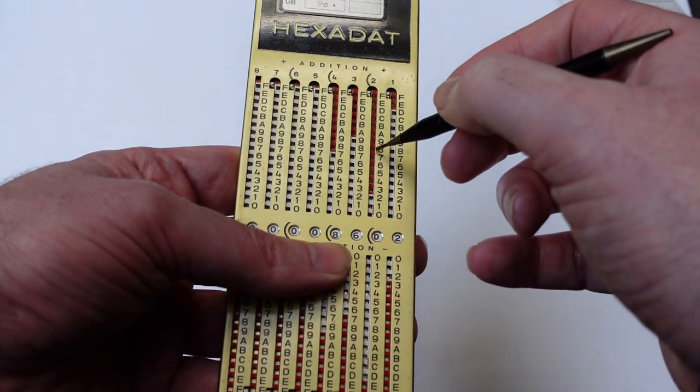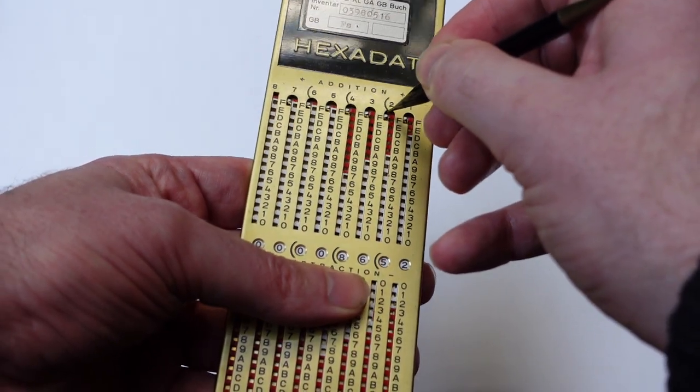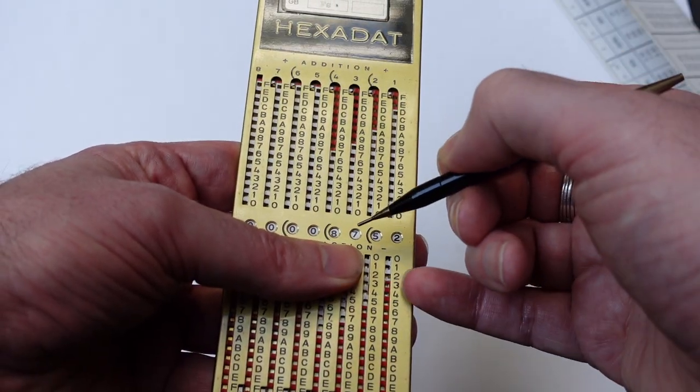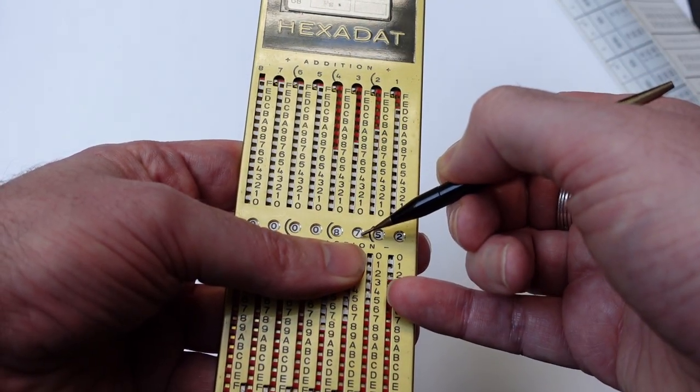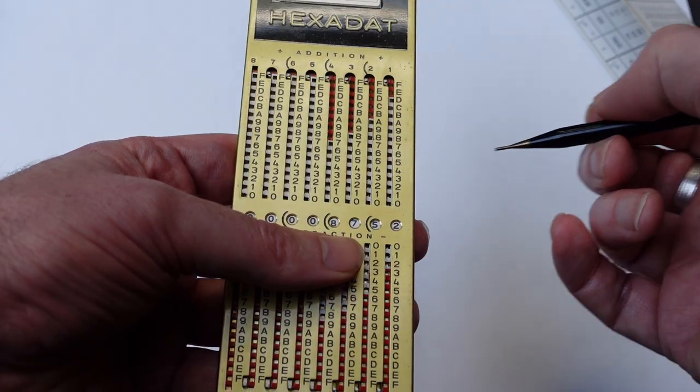So if I add 8 to this column, I go up and around. That increments the next column from 6 to 7. And so on.